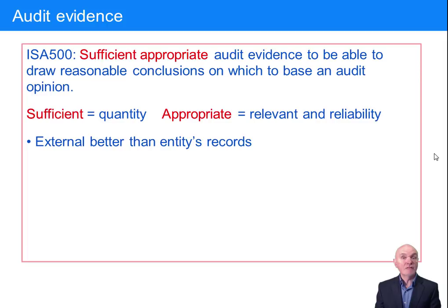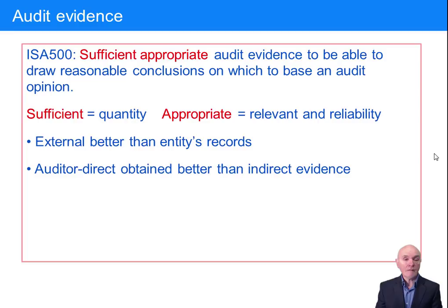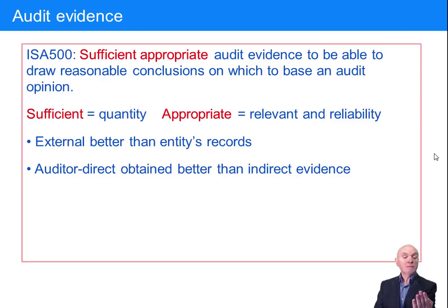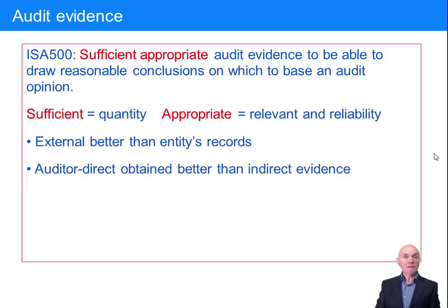Secondly, auditor-direct-obtained evidence is better than indirect evidence. When we write to customers of the client asking them to confirm how much they owed at year-end, we want those replies to come directly back to the auditor. Think what would happen if customers sent replies to the client — the client could cherry-pick which ones to pass on to the auditor and discard the ones that don't agree. If you can get evidence directly yourself, or see something directly — like seeing a machine working in the factory rather than just being told it works — that is much stronger evidence.